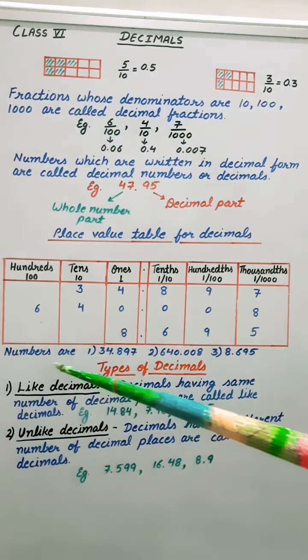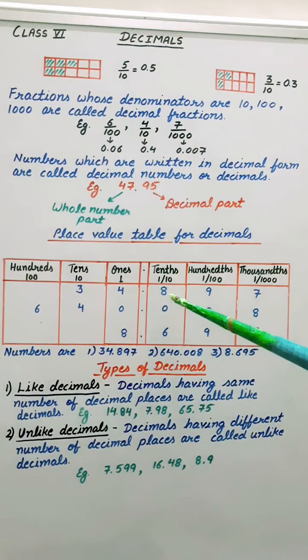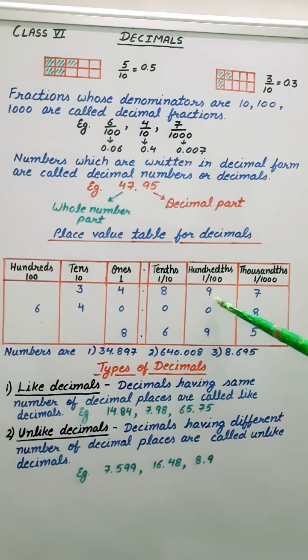So let's see some numbers here. If it is 34.897. Now before decimal we have 34. It's a whole number part. So 3, 4, 34 I have written. After the decimal 8, 9, 7. So 8 are tens place, 9 hundreds place, 7 thousands place.